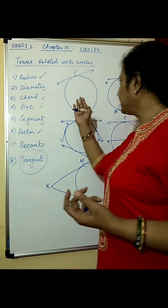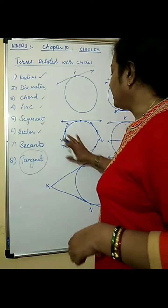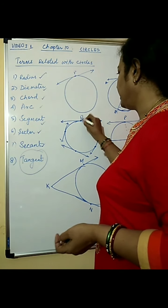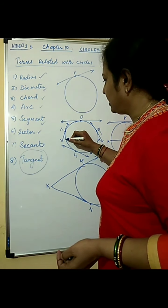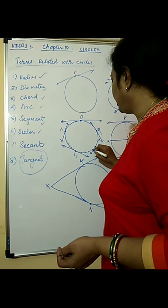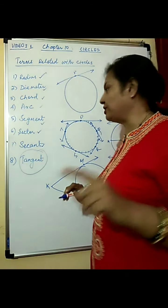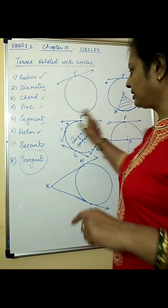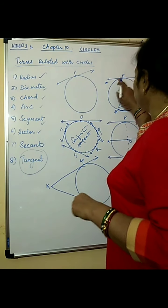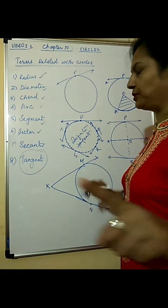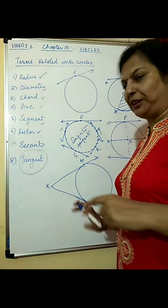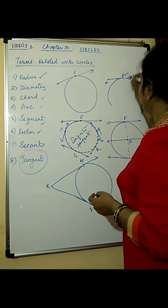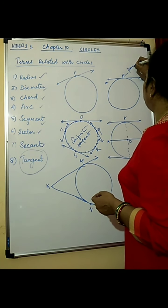There can be infinite tangents drawn on any circle. As you know, a circle is made of infinite points, so at every point one tangent is possible — infinite tangents are possible on the circumference of a circle. Through one point, only one tangent is possible. The point where the tangent is drawn is called the point of contact.